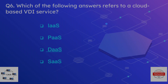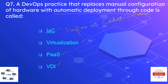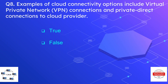The platform providing desktop services is used by VDI — Virtual Desktop Infrastructure. Question number seven: a DevOps practice that replaces manual configuration of hardware with automatic deployment through code is called? The options are IaC, virtualization, PaaS, or VDI. The correct option is IaC — Infrastructure as Code. From the word 'code' you can relate that the correct platform used by the DevOps practice is IaC.